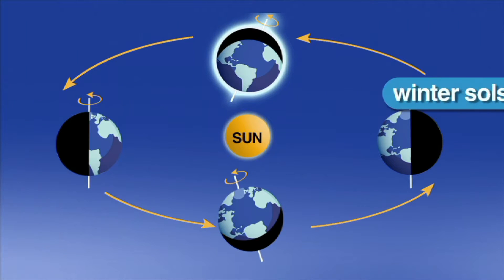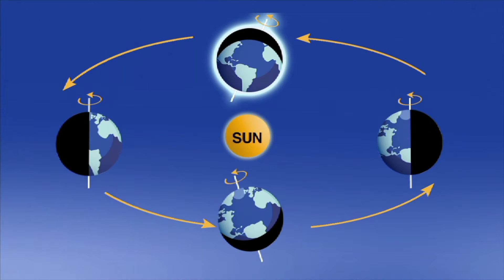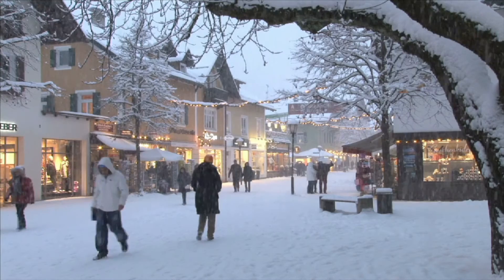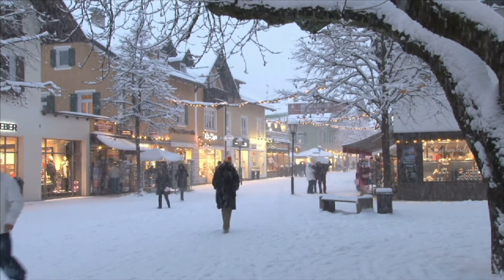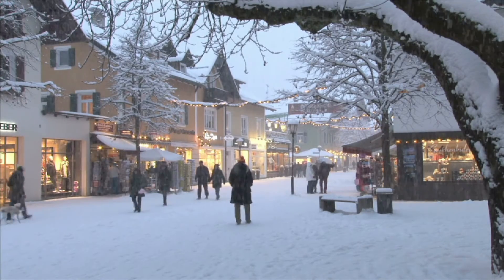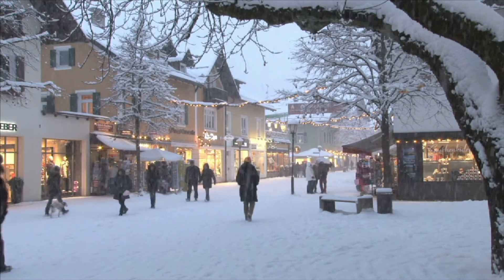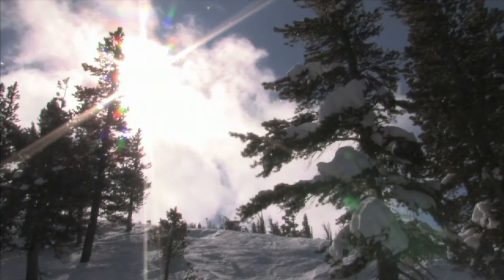The winter solstice, or the shortest day of the year, happens when the Earth's North Pole is tilted farthest away from the Sun. The winter solstice usually happens around December 21st. When it is tilted away from the Sun, it is winter in the Northern Hemisphere, and we receive less light.